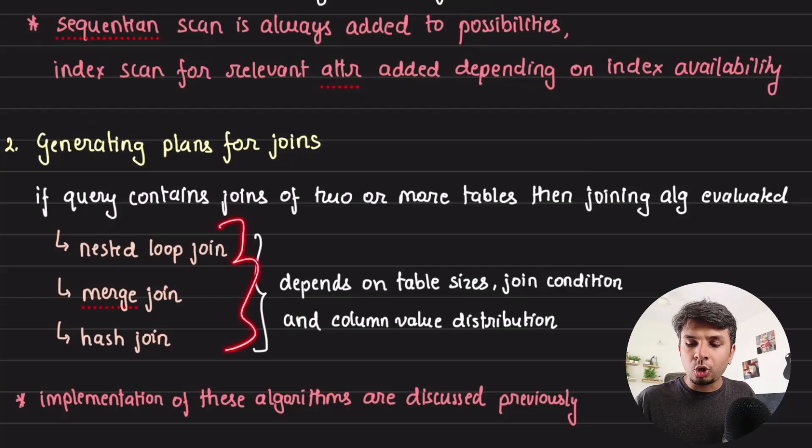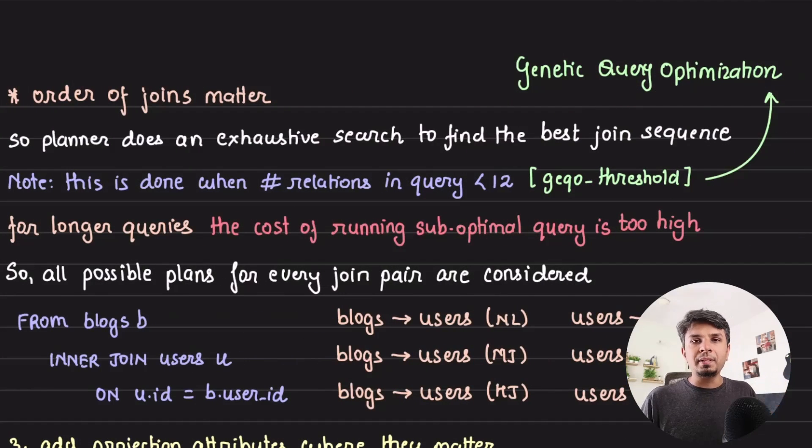Which join to pick depends on the size of the table, the join condition that we have given. For example, for an equi-join, hash join is better. For a small dataset, nested loop join is better. For a large dataset, merge join is better. But it also depends on the column value distribution. Let's say if you have a column with high cardinality versus low cardinality, depending on the join condition, which one works better? Your database basically considers all possible cases, all possible join orders, all possible algorithms, and then estimates the cost for each one of them.